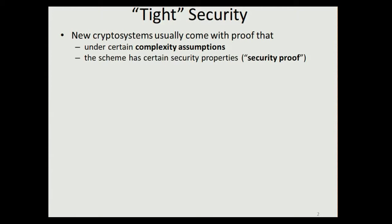Usually when we construct a new cryptosystem, like a public key encryption scheme for instance, we construct a scheme together with a security proof which shows that under certain complexity assumptions the scheme has some desired security properties.